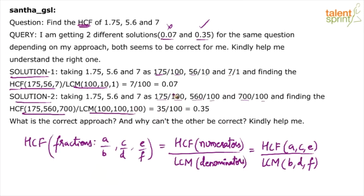So, I am not going to solve this. I am sure you know how to find out HCF. So, HCF of 175, 56, 7 comes out to be 7. LCM of 100, 10, 1 comes out to be 100. Answer is 0.07. Here, HCF of 175, 560, 700 comes out to be 35. LCM of 100, 100, 100 is 100. 35 by 100 is 0.35.